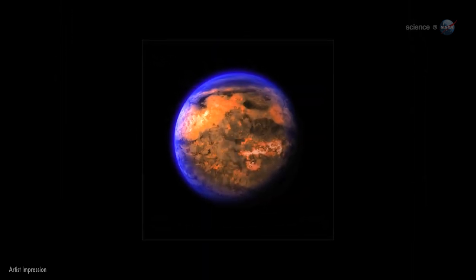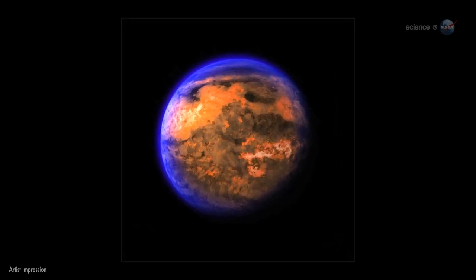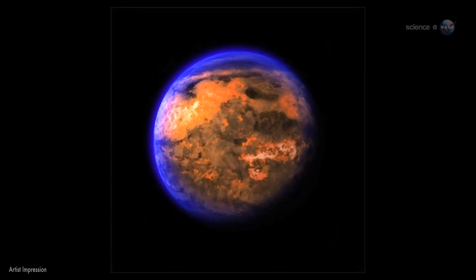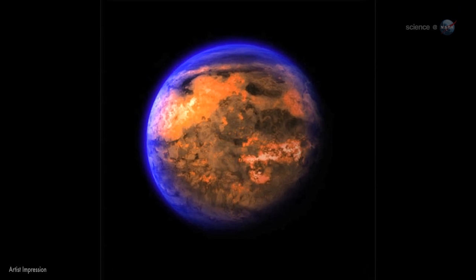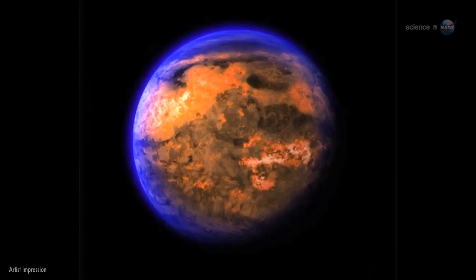About a fifth of the planet's mass must be made of light elements and compounds, including water. Given the intense heat and high pressure these materials likely experience, researchers think the compounds likely exist in a supercritical fluid state.